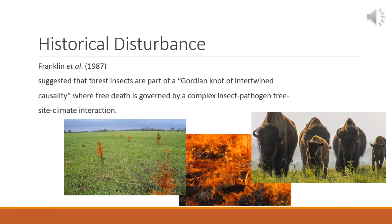The historical disturbance mechanisms of the prairie were dominated by fire, grazing from large mammals, and drought. These three disturbances effectively limited the establishment of trees in the prairie landscape, unless adequate moisture was available, which was primarily dictated by topography.